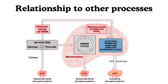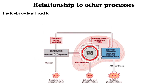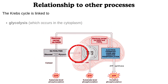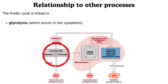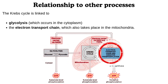Relationship of the Krebs Cycle to other processes. The Krebs Cycle is linked to glycolysis, which occurs in the cytoplasm, and the electron transport chain, which also takes place in the mitochondria.